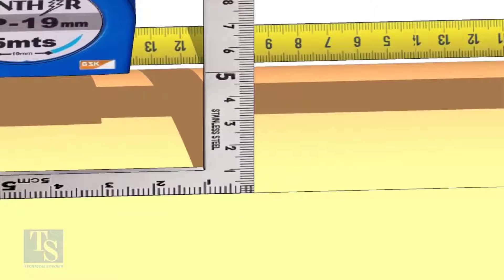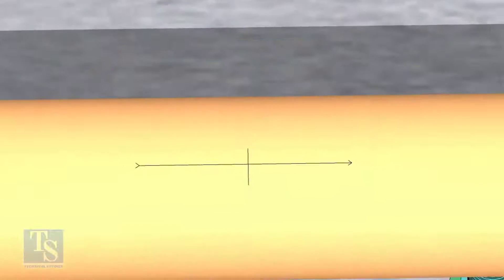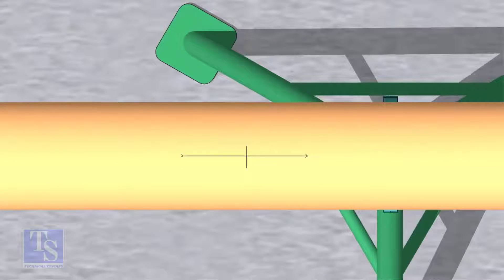Mark on the pipe where the right angle edge touches. This is the center of the OLED. Punch mark the center.